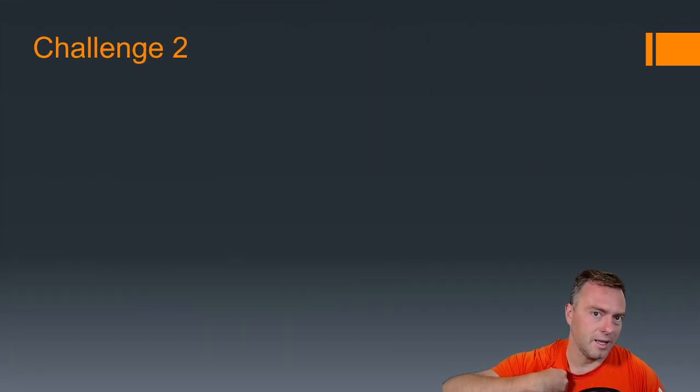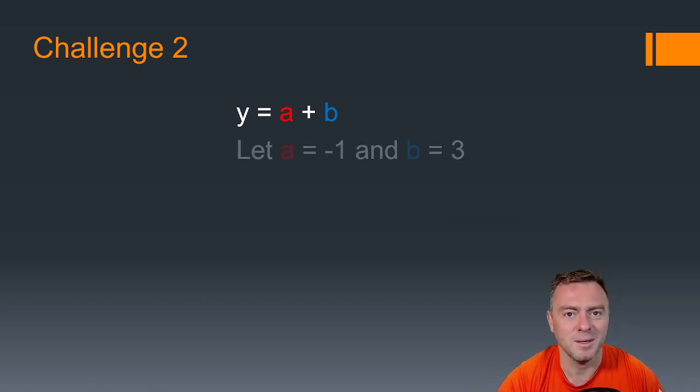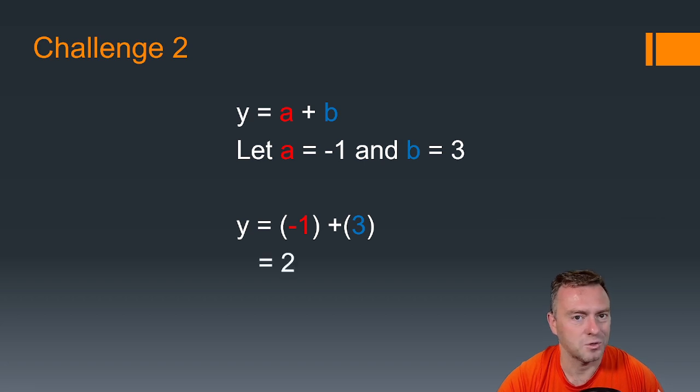Cool. So the next challenge that we have, basically we want to go through and fill in the blanks for this. So we've got y = a + b. If we let a = -1 and b = 3, we're just going to substitute those in and we get -1 + 3, which gives us 2.